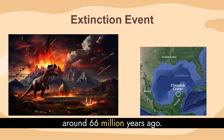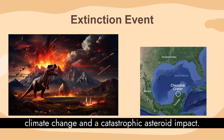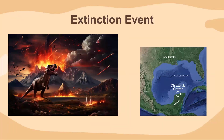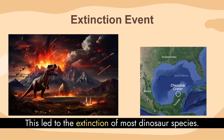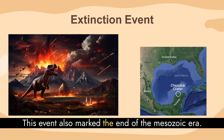Around 66 million years ago, a massive extinction event, likely caused by a combination of volcanic activity, climate change, and a catastrophic asteroid impact — the impact site located in present-day Mexico — led to the extinction of most dinosaur species. This event also marked the end of the Mesozoic era.